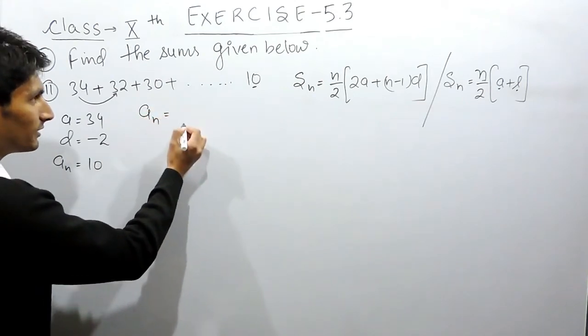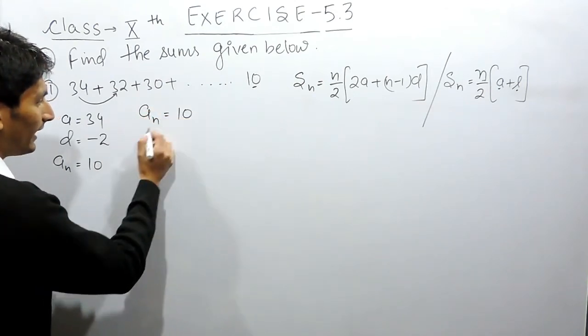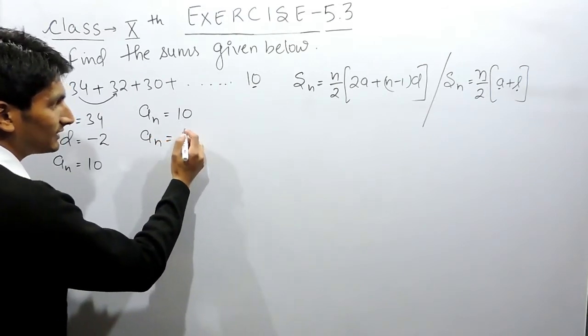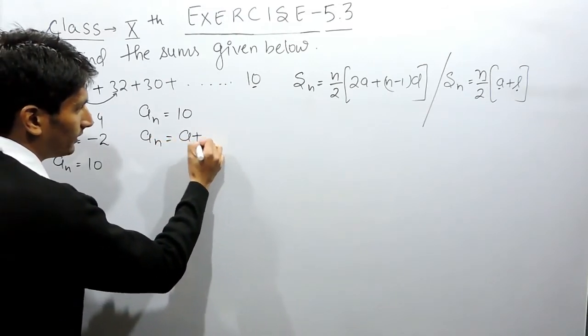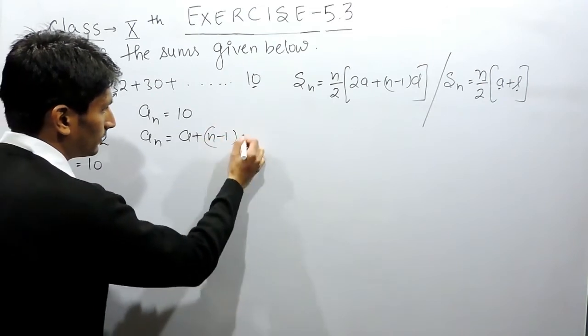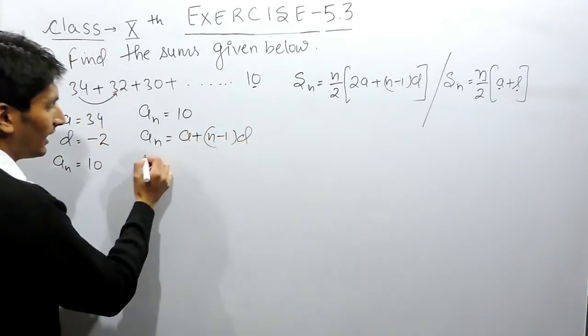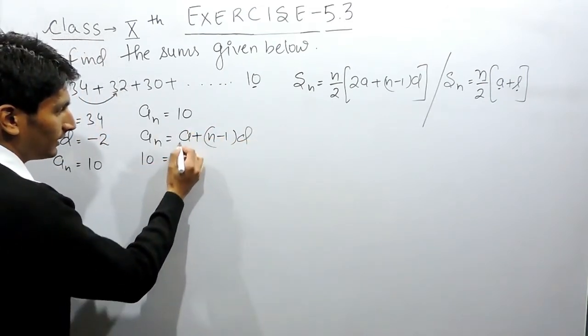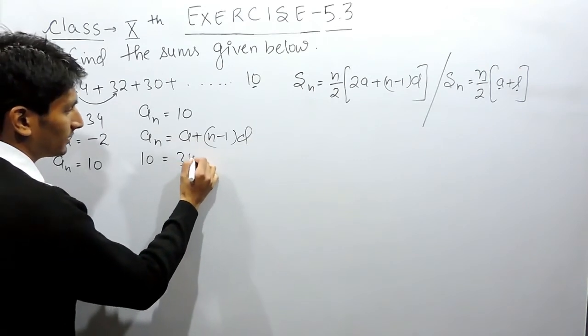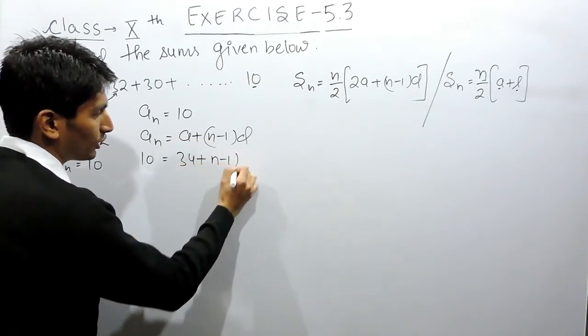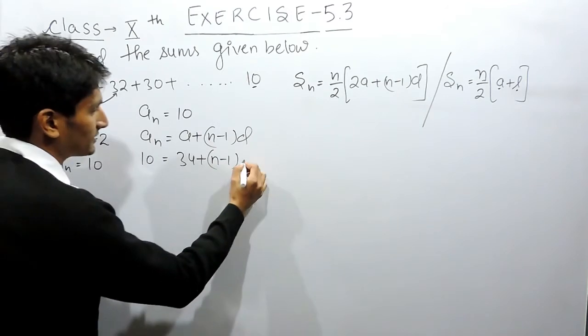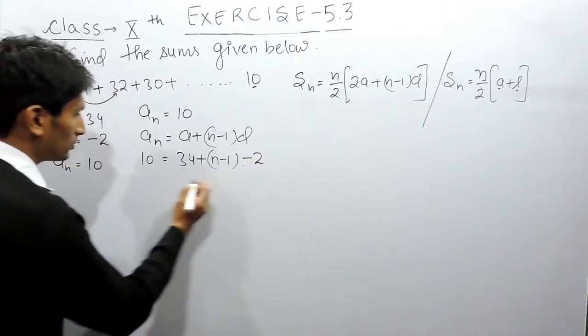The last term is given as 10. For finding the last term, we have a formula: a_n = a + (n-1)d. The first term is 34, and the number of terms we need to find out.